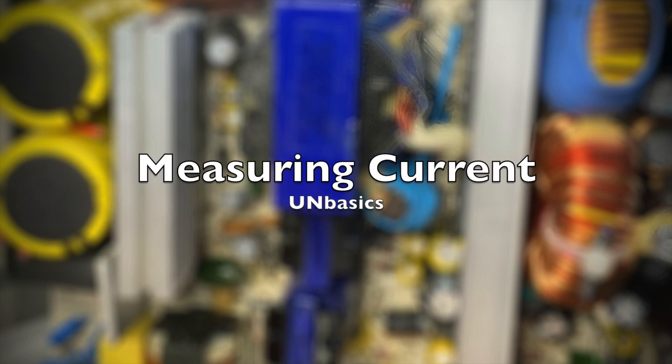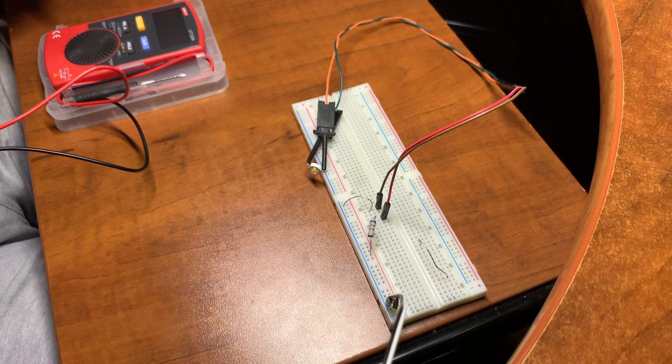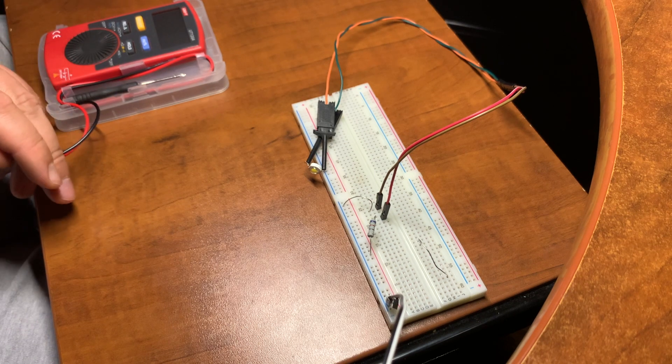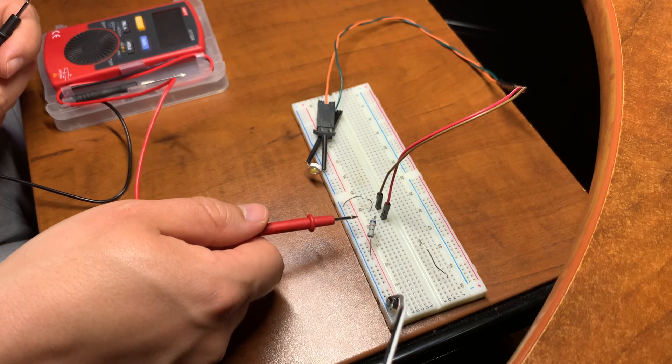Hello and welcome to UNBASICS. Today I'll go over how to measure current in a circuit without having an ammeter or multimeter with current measuring capabilities. I have a very simple circuit here. It consists of a resistor and an LED.